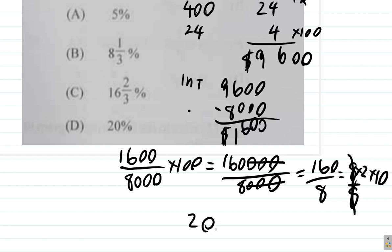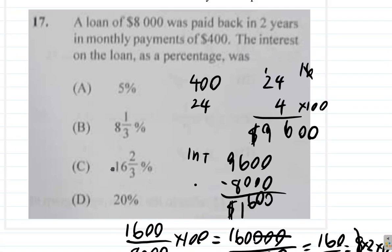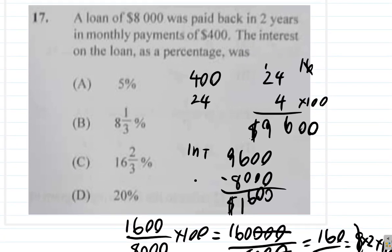8 to 16, 200, add the 0. That's another way you could do it. So it's 20 percent. So question 17, the answer is D.